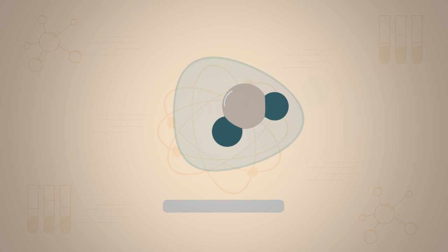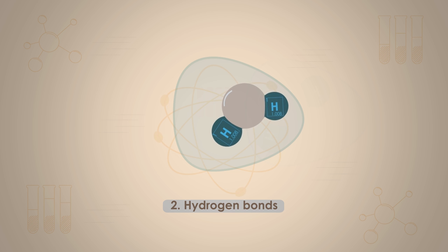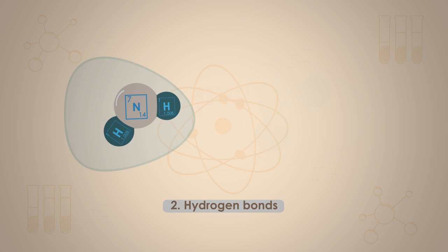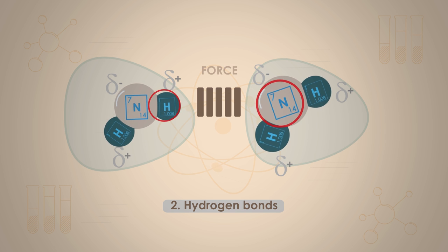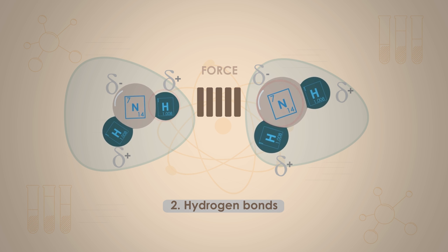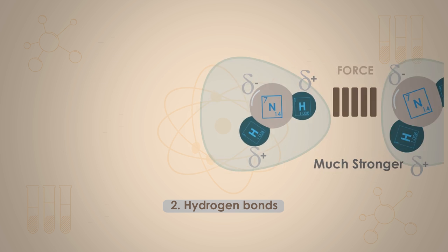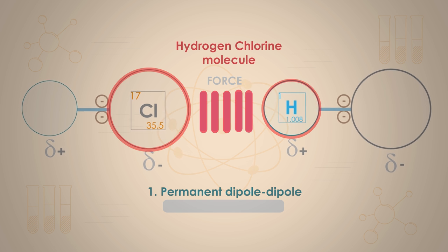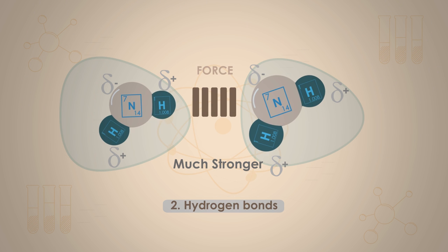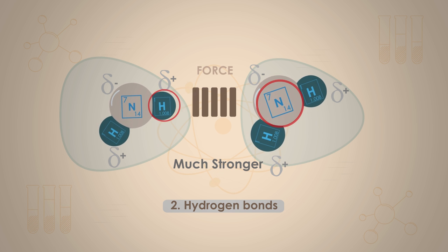The second type of intermolecular force is the hydrogen bond. The permanent dipole in a covalent bond between a hydrogen atom and a fluorine, oxygen or nitrogen atom is particularly strong. Thus, the attraction between the electron-deficient H, delta positive, of one molecule and the lone pair of electrons on a fluorine, oxygen or nitrogen atom of another molecule is much stronger than the permanent dipole-dipole attraction between two hydrogen chloride molecules.